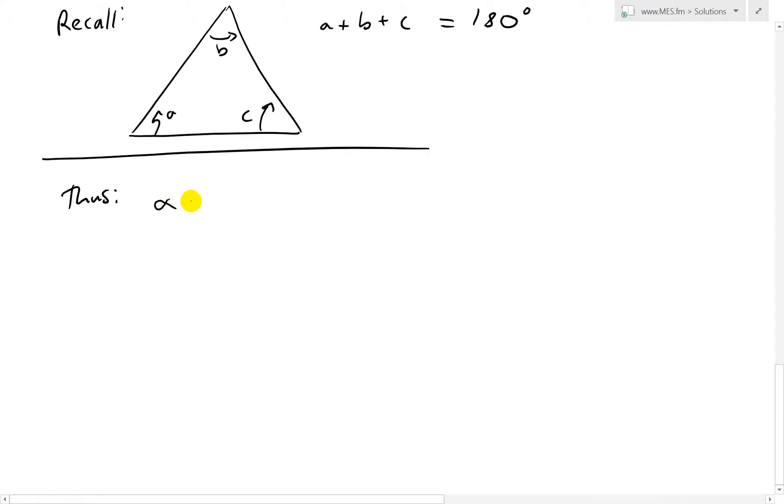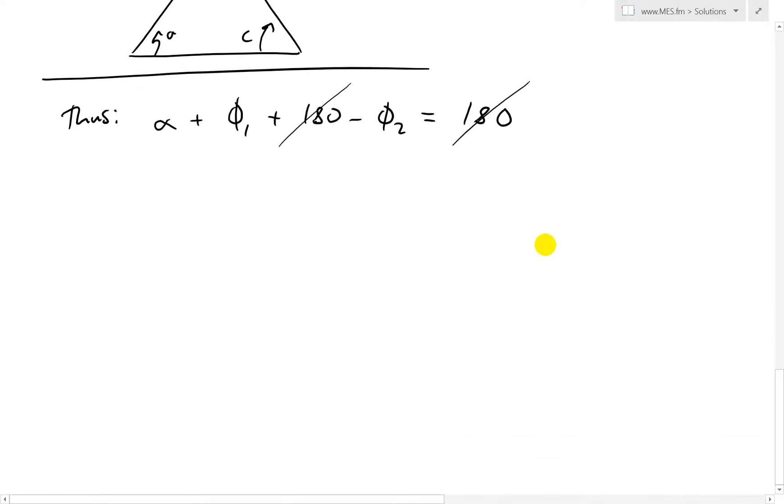We get alpha plus phi 1 plus 180 minus phi 2 equals 180 degrees. I'll put this in brackets to show it's three angles. Now we have alpha plus 180 plus phi 1, and we can just cancel these out. When we cancel that, we get alpha plus phi 1 minus phi 2 equals 0.